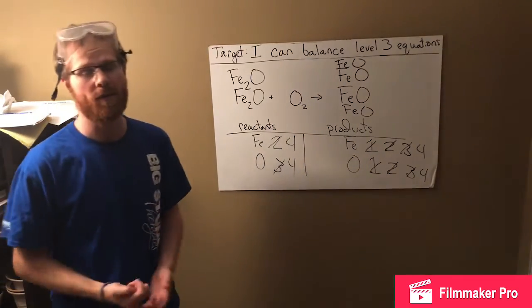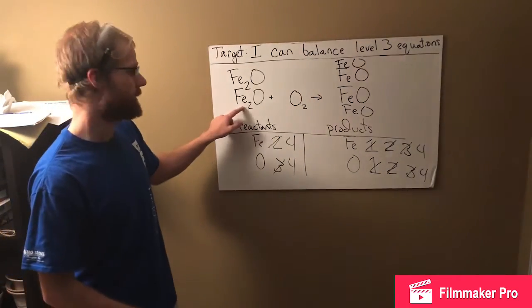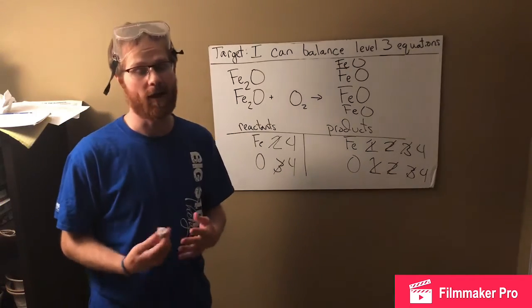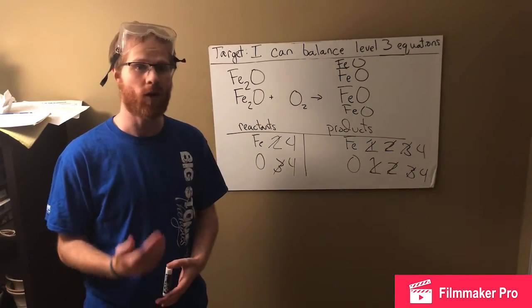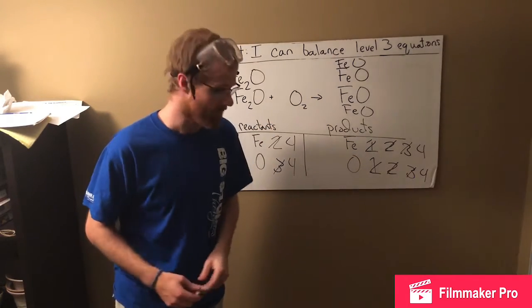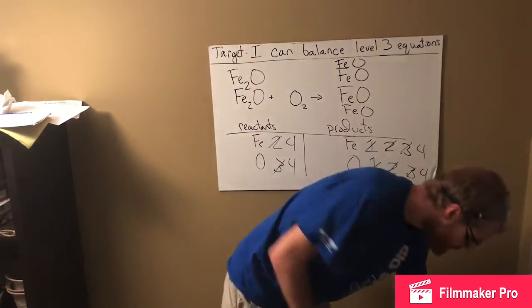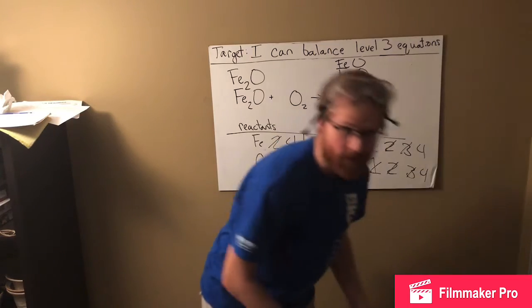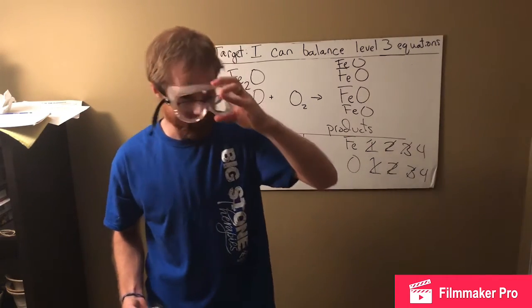This is a really cool chemical equation. What we're effectively doing is we're taking one type of something called iron oxide. We're taking iron oxide one, we're burning it with oxygen, and we're turning it into iron oxide two. And I thought we could actually do this one as a little bit of a demonstration. This is kind of a fun one.